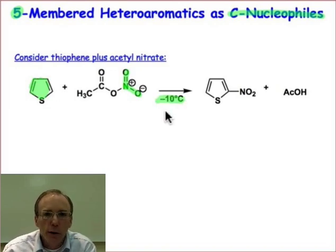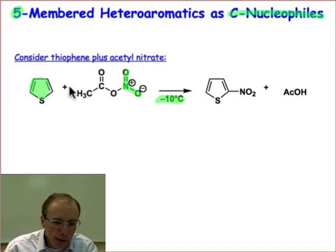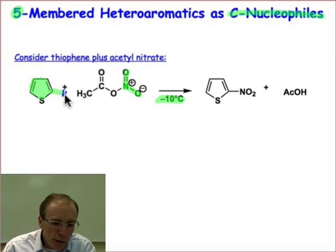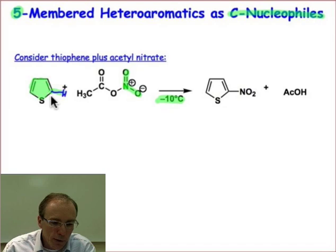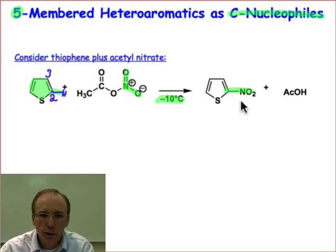First, the reaction takes place at a very low temperature, minus 10 degrees C. Obviously this is much accelerated compared to the previous case of the six-membered ring. Second, the substitution takes place at the 2 position — the so-called C2 of thiophene. That hydrogen atom at carbon 2 is displaced and undergoes substitution with the nitro group.